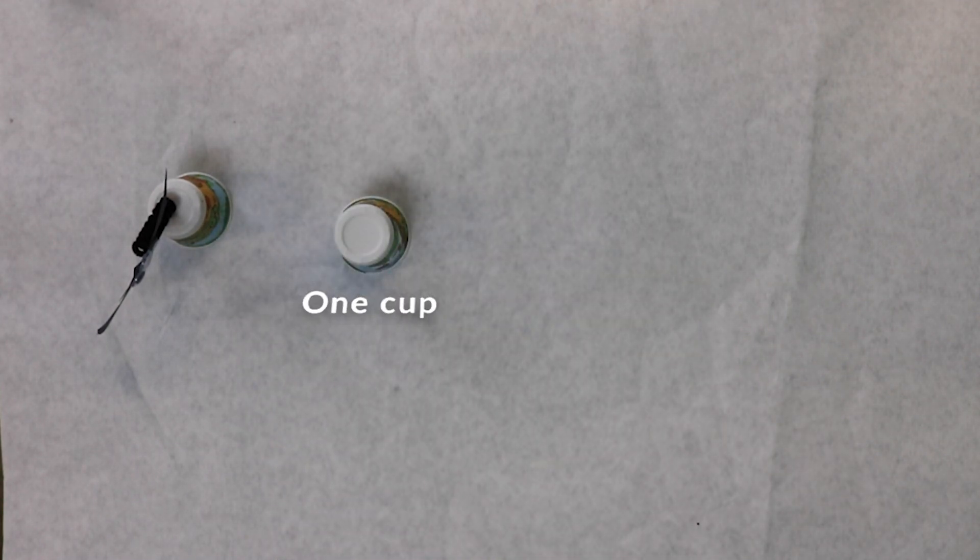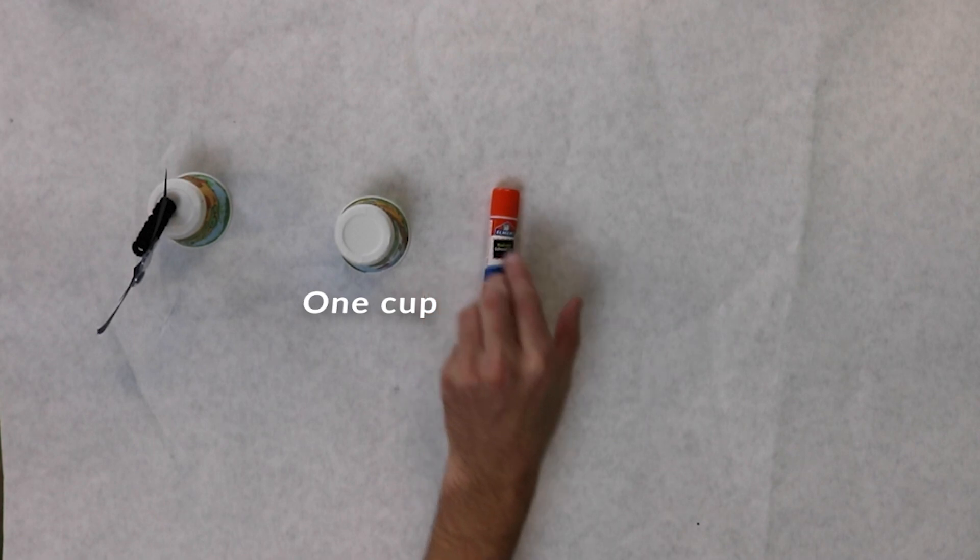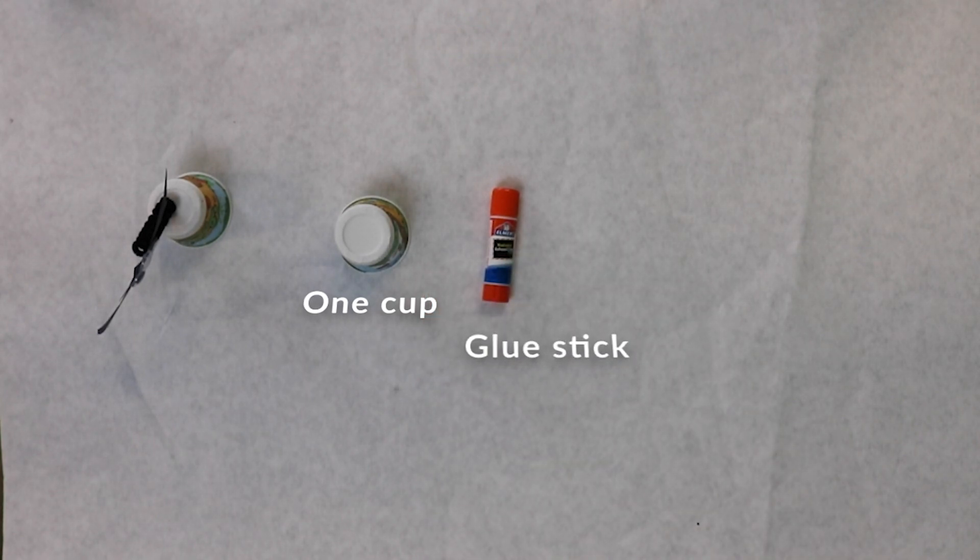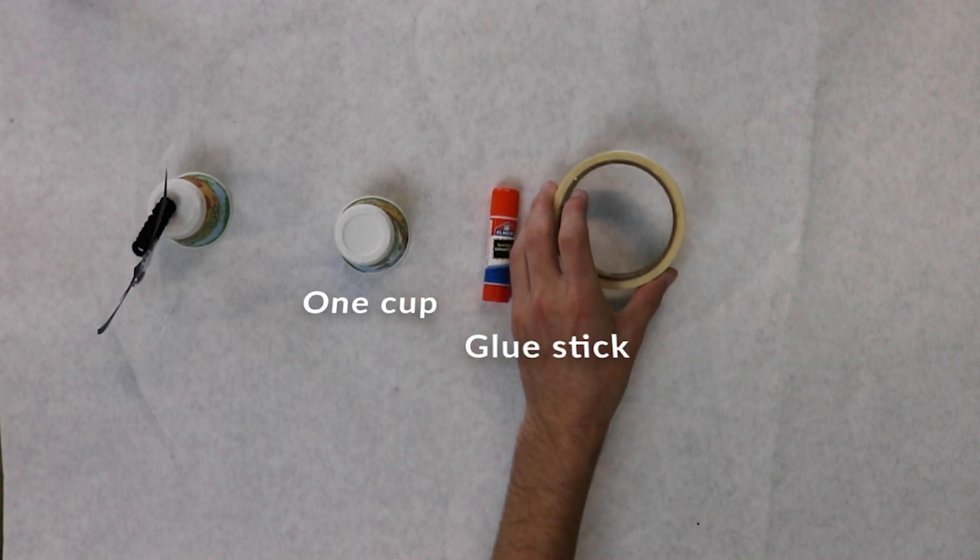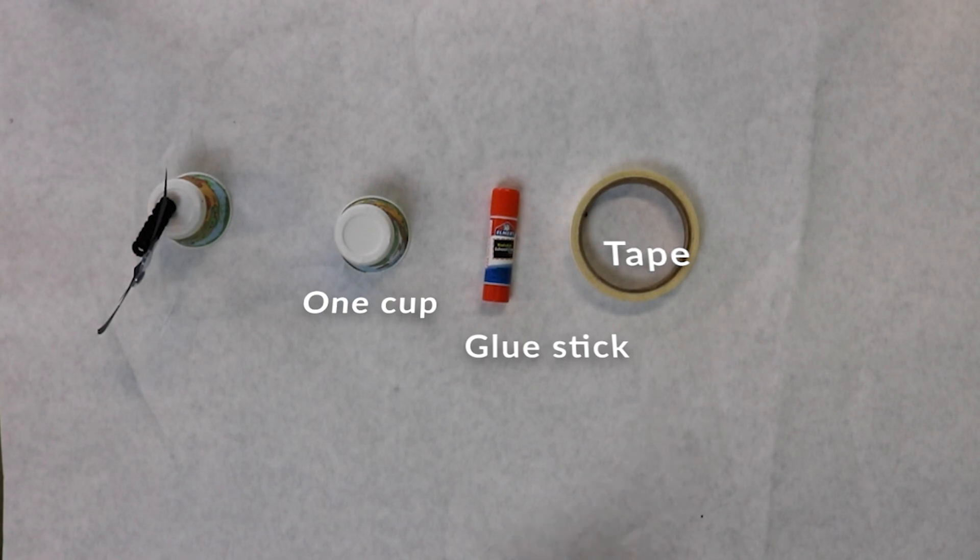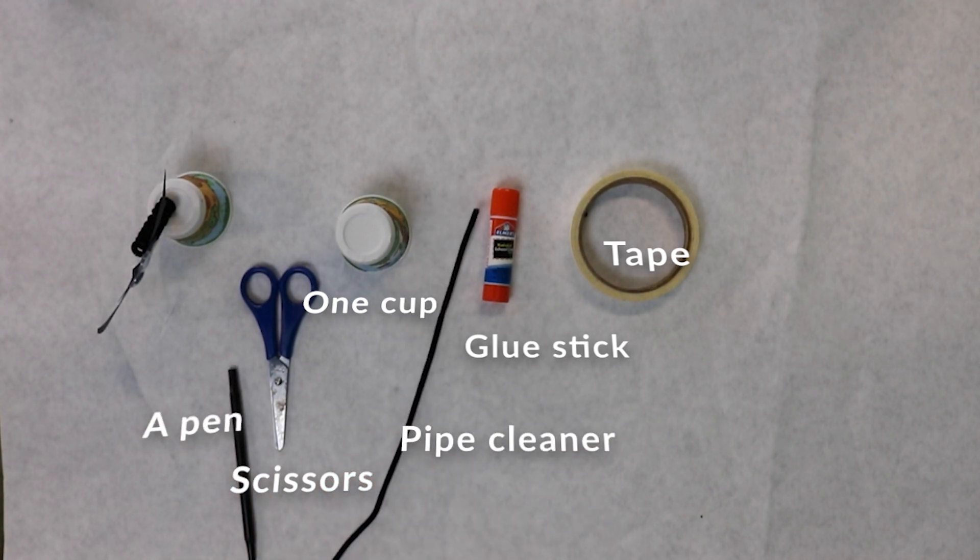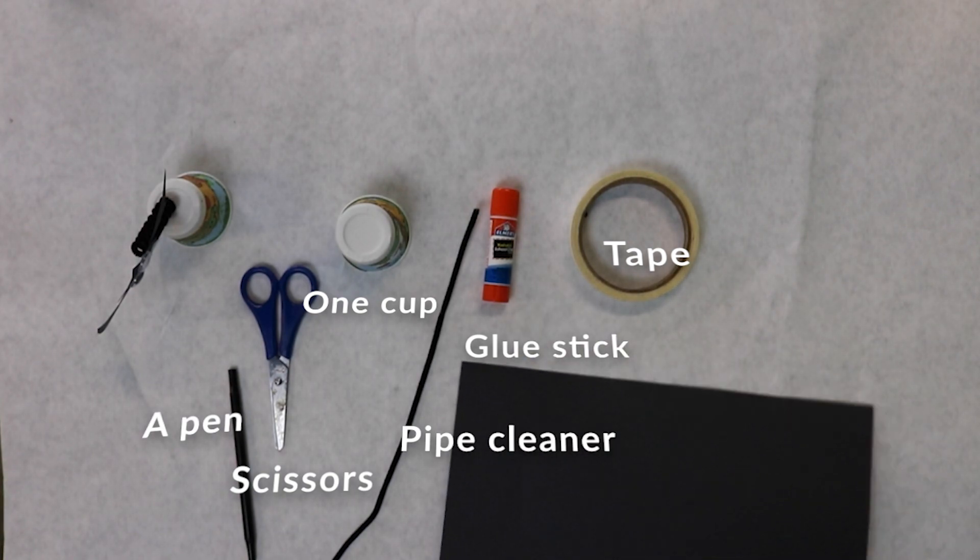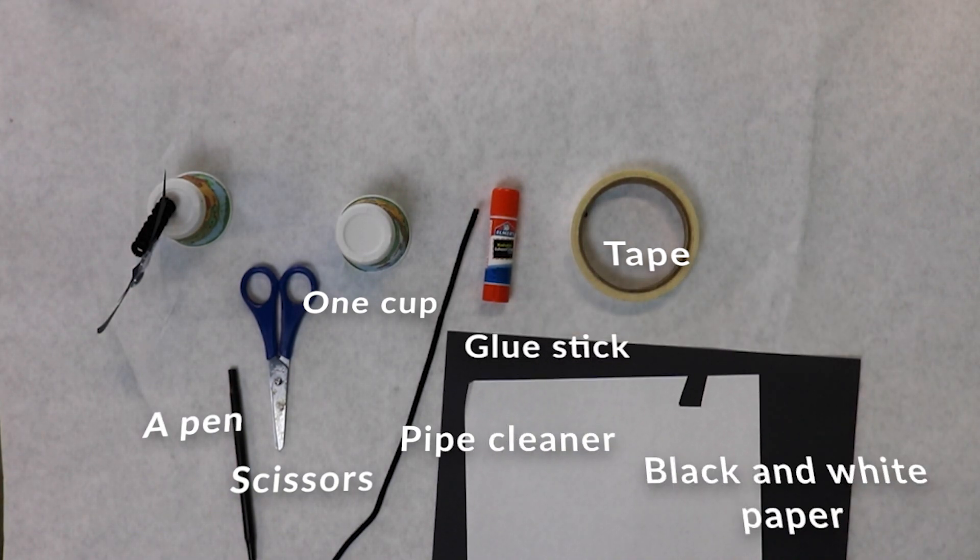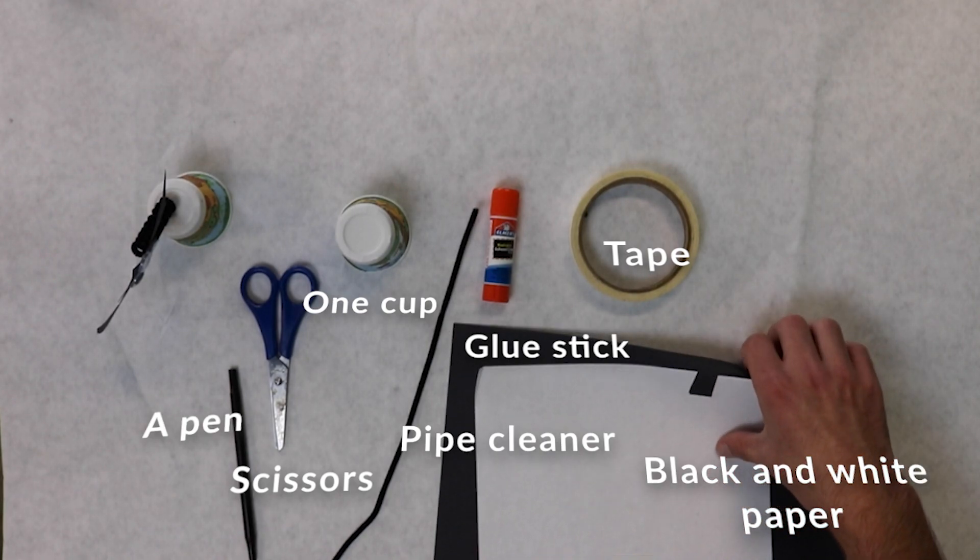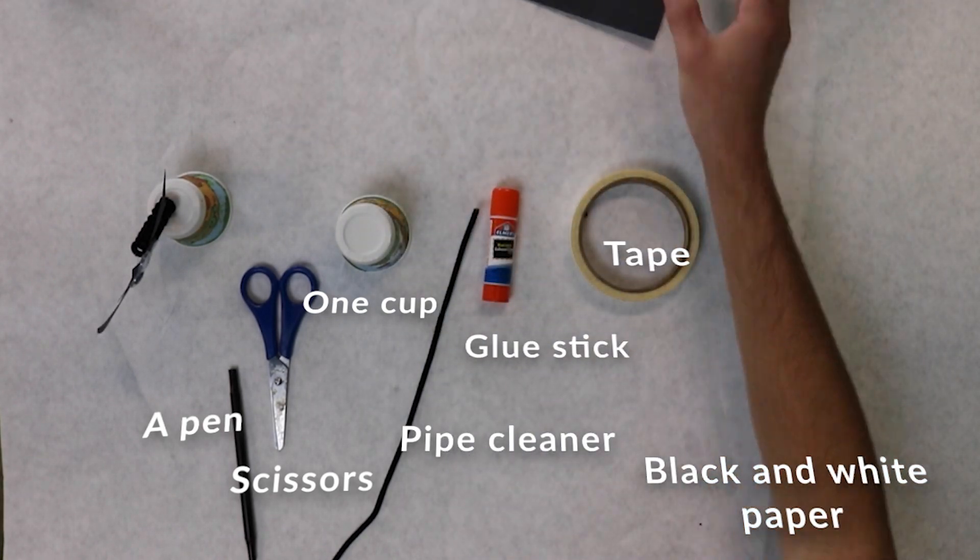For this you're going to need one cup, a glue stick, tape, scissors, a pen, a pipe cleaner, and a black and white piece of paper. You'll also need googly eyes.